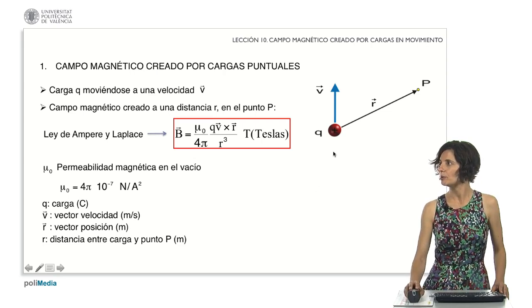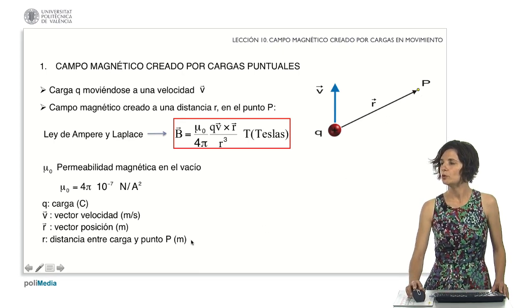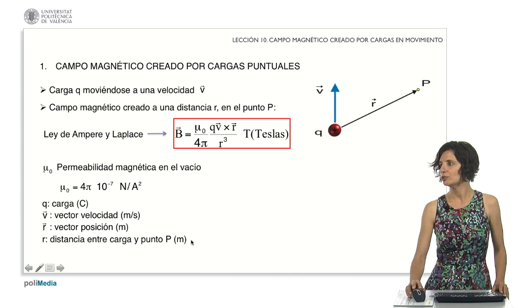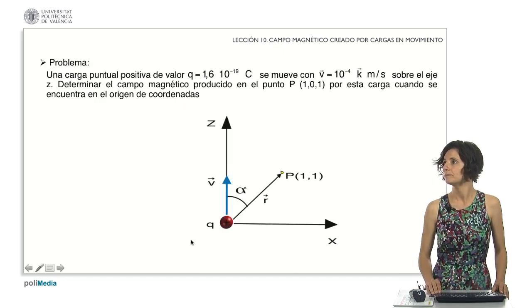This vector connects the charge Q, which generates the field, to the point where we are calculating it. Lastly, the scalar R represents the distance in meters between the charge and the point P.